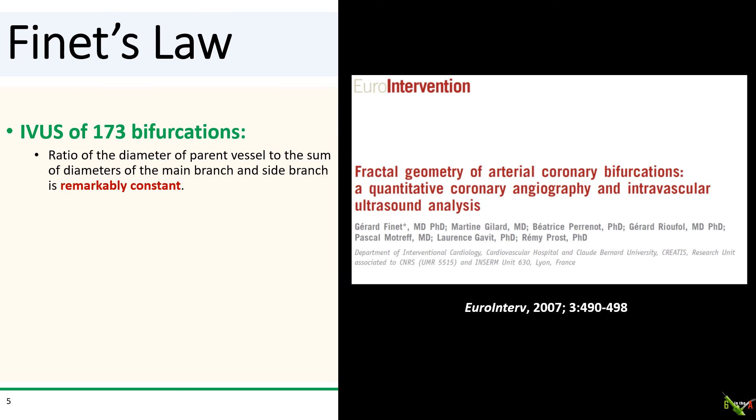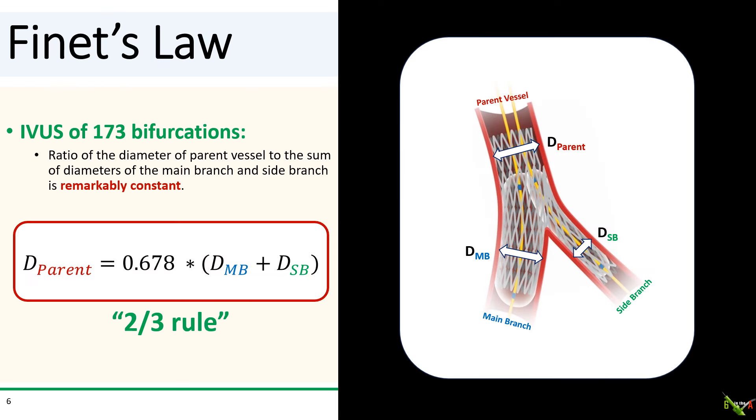By far the most commonly used rule for sizing balloons and bifurcation PCI is Finet's law. Back in 2007, Gerard Finet looked at 173 bifurcations under IVUS and found that the ratio of the diameter of the parent vessel to the sum of the diameters of the main branch and the side branch is actually remarkably constant. This relationship is given by this linear formula, which we now know as Finet's law. The diameter of the parent vessel is equal to the sum of the diameters of the main branch and the side branch multiplied by 0.678. And since 0.678 is so close to two-thirds, this is also known as the two-thirds rule. And interestingly, in 2009, Polish researchers found that Finet's law is actually but a special case of Murray's law.